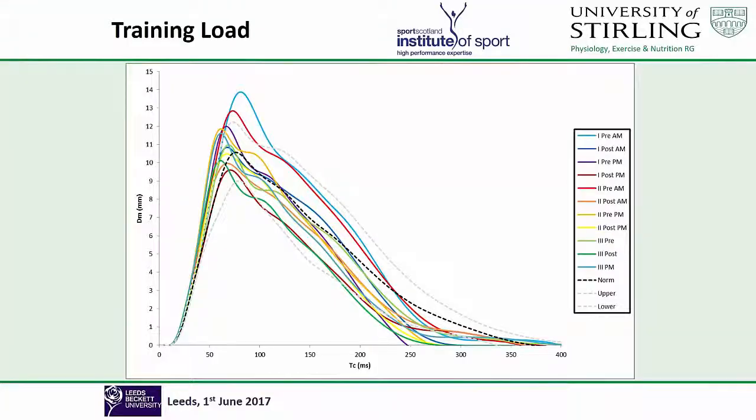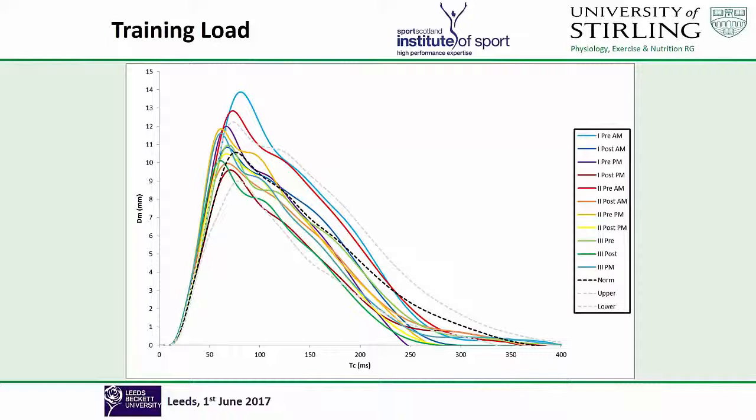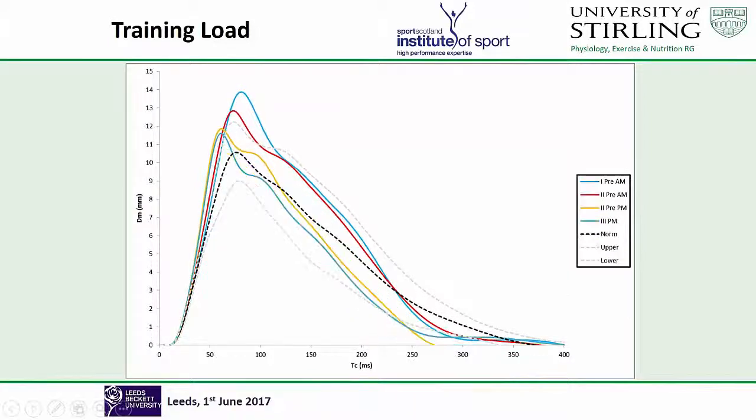We went on next to track our athletes over a slightly longer period of time, this time we used three days in a row. We got them before and after every training session, so we ended up with about 11 or 12 measurements. It's two training sessions most days, one on some of the days. You can see the dotted black line is the mean, and our range is the two dotted grey lines. To tidy that up, I'm going to remove all the measurements that were within the normal range, and we're left with these four. Why were these four outside normal range?